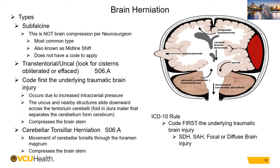Brain herniation — a new code that replaced a prior G code. There are different types of brain herniation. Transcalvarial herniation is when the brain herniates outside — most often seen when neurosurgery performs a craniectomy and removes the skull bone, and the brain swells and herniates right through. Subfalcine herniation is the most common type and is also known as midline shift — it is a displacement of the cingulate gyrus from one hemisphere to the other.